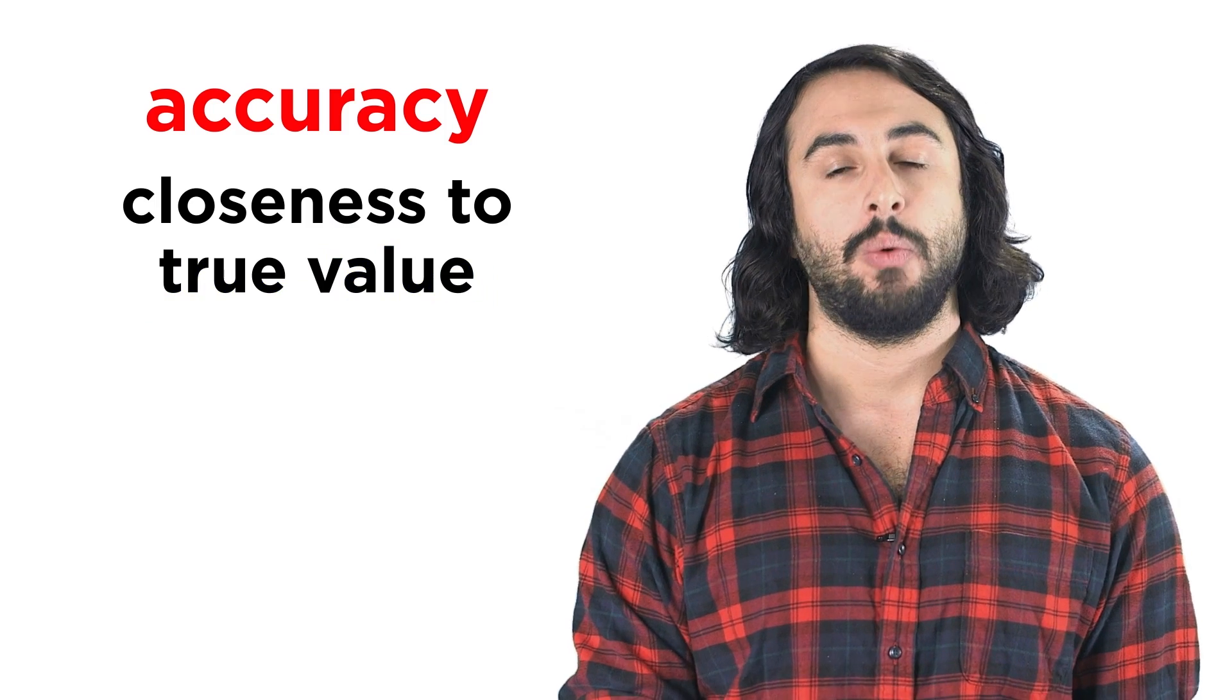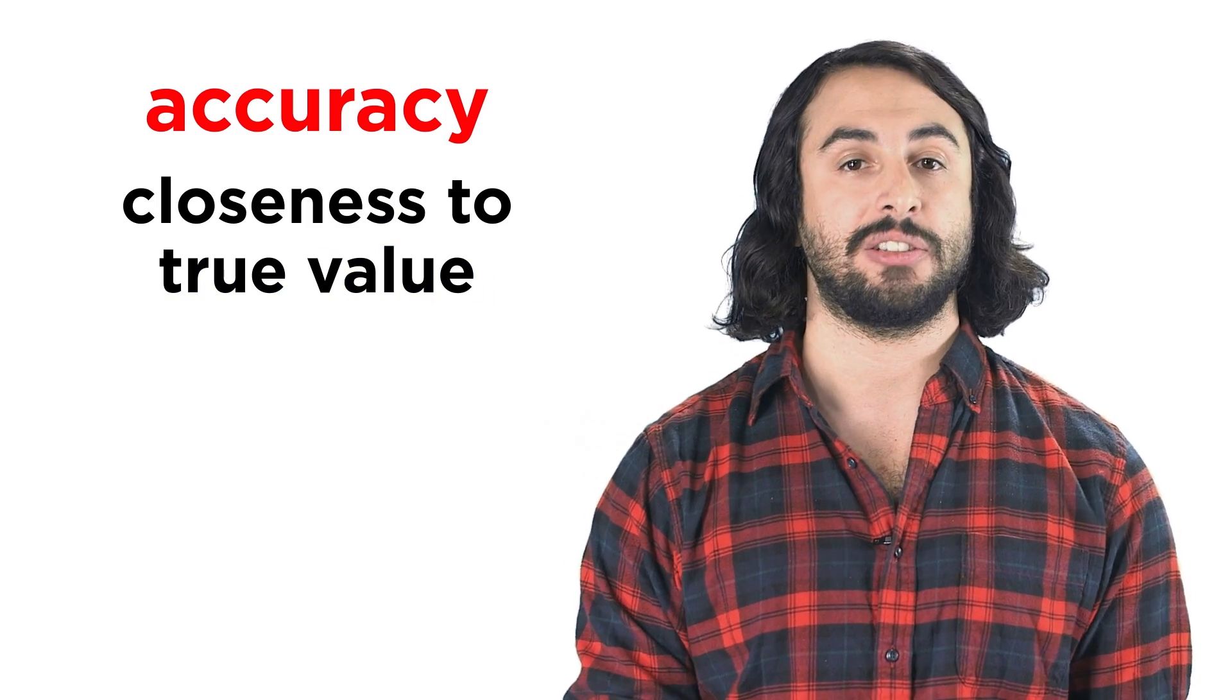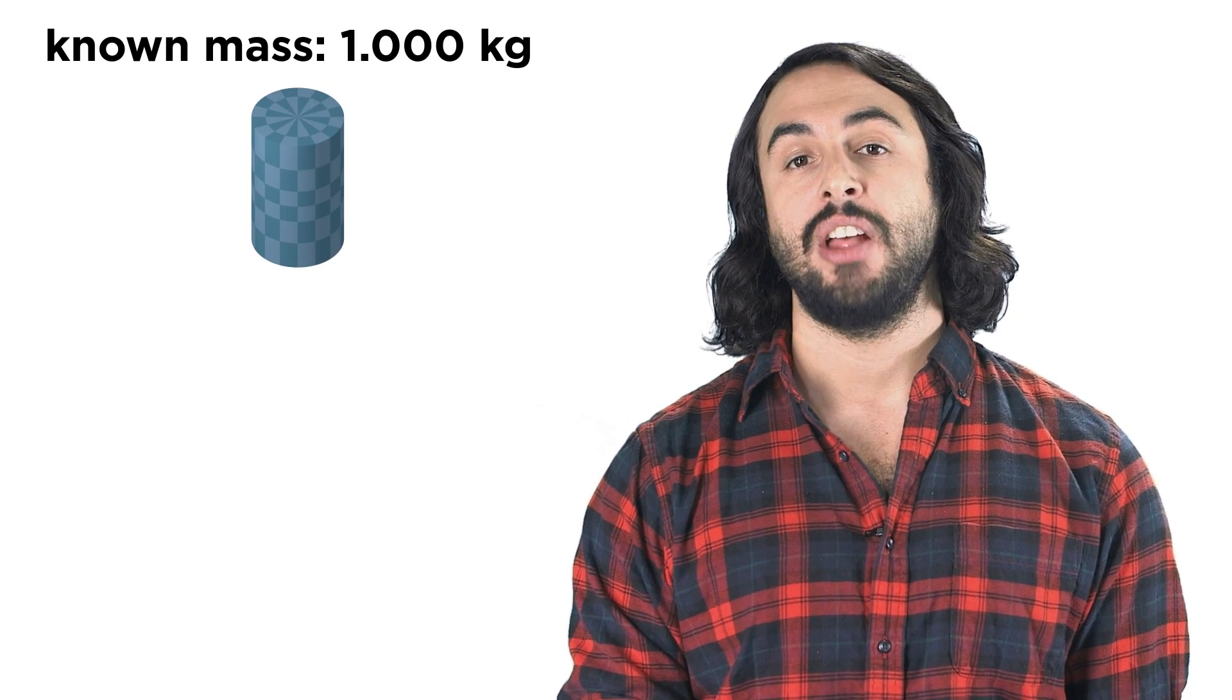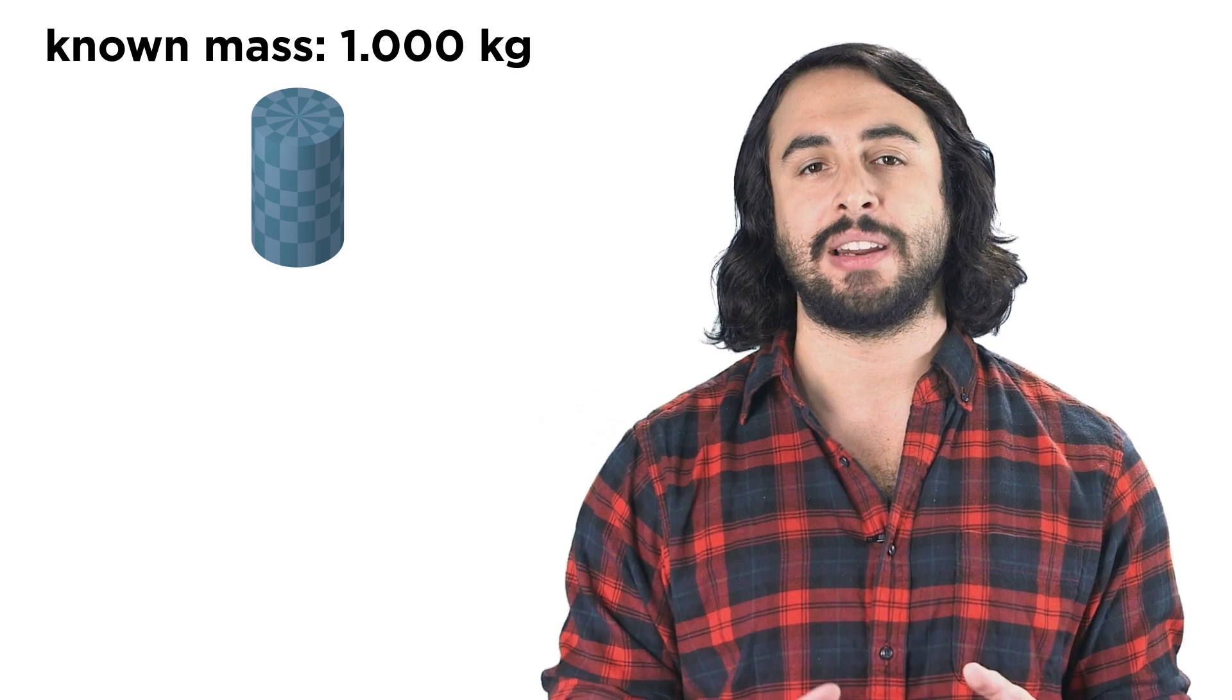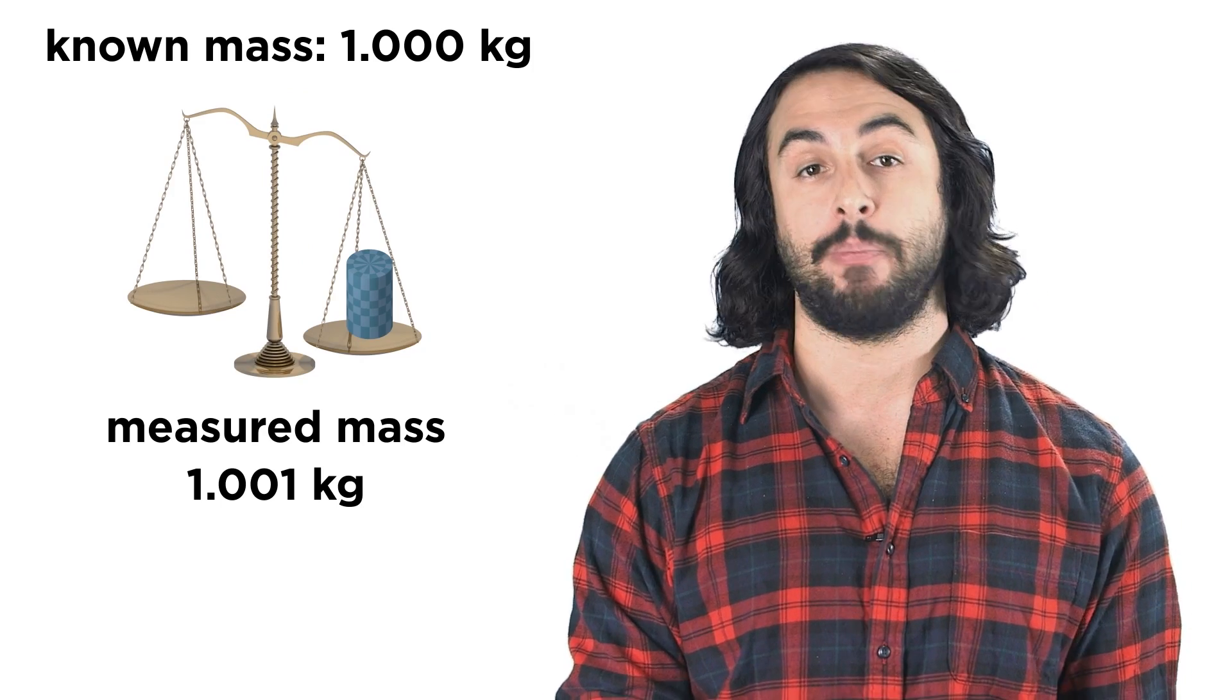Under one definition, we could understand that the accuracy of data refers to how close it is to the true value of something. So if we measure the mass of an object that we knew was precisely one kilogram, and we get 1.001 kilograms on our balance, we could say that we got very accurate data.